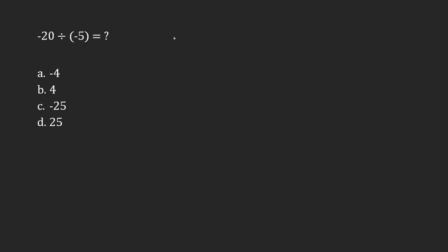In this case I'm doing a negative divided by a negative. The signs are the same and so the result is going to be expressed as a positive. So I really just have to think about 20 divided by 5, even though it's actually negative 20 divided by negative 5.